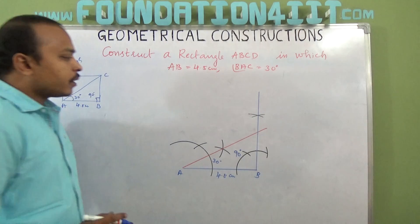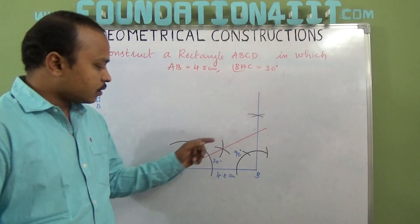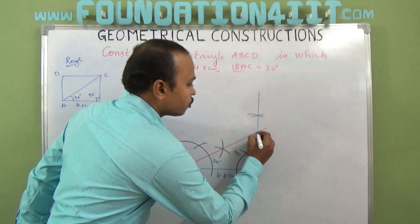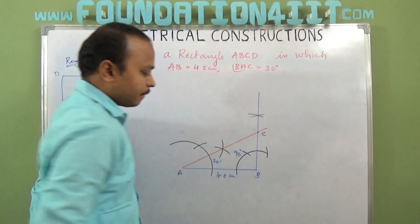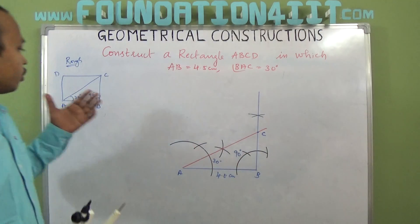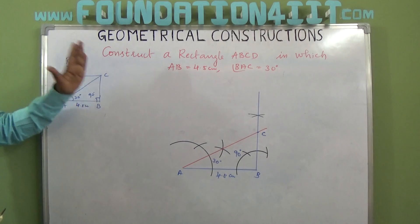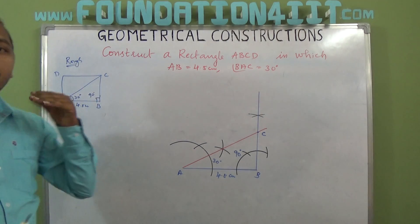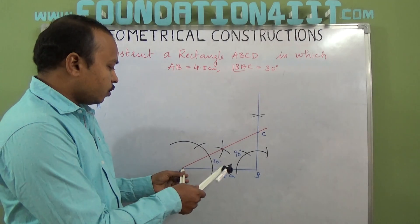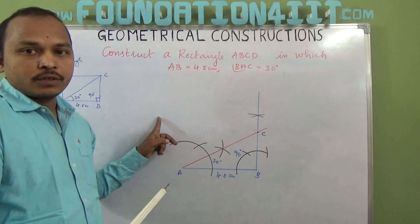So that is 30 degree from A and 90 degree from B. This diagonal and the side — where they join, that is point C. Now we have got AB and BC. According to the properties of a rectangle, AB is equal to CD and BC is equal to AD — opposite sides are equal.